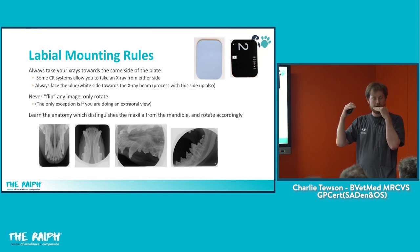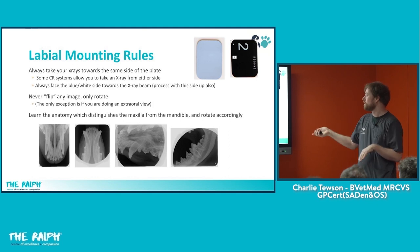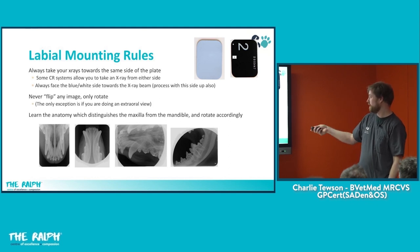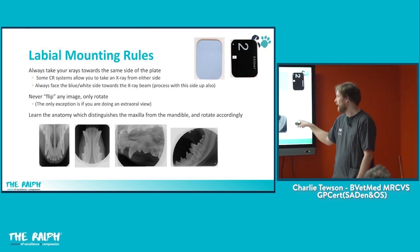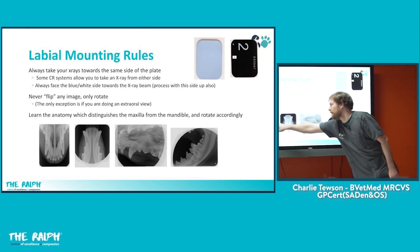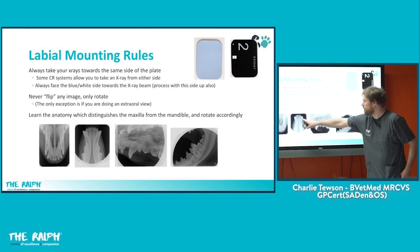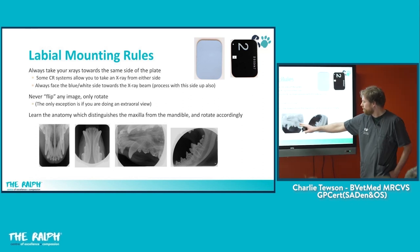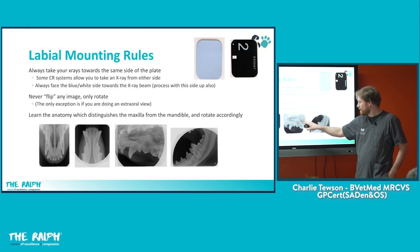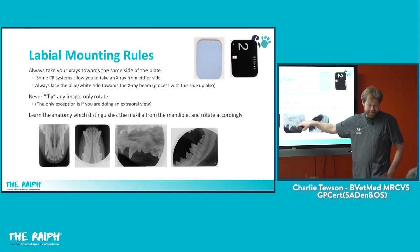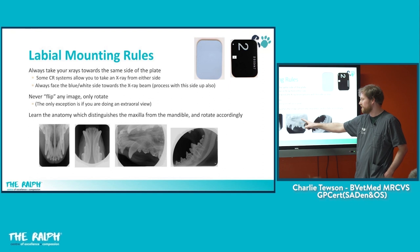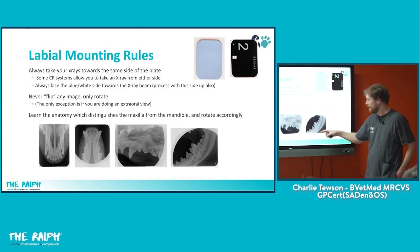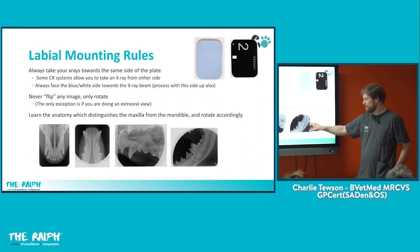With a CR system, make sure you're always taking towards the white or blue side. And learn your anatomy that distinguishes whether you're looking at the maxilla or mandible. Your turbinates and palatine fissures distinguish the maxilla — the contral crest, the junction of the vertical body of the maxilla and the palatine process, and the presence of turbinates mean it's maxilla. For the mandible, you haven't got those structures and you've got a mandibular canal running through.